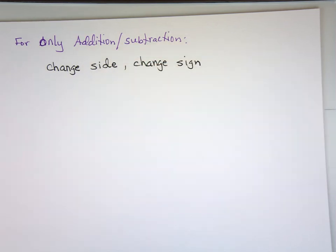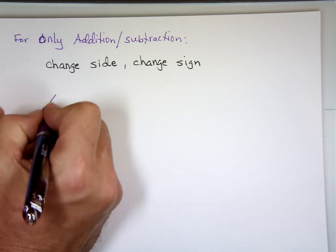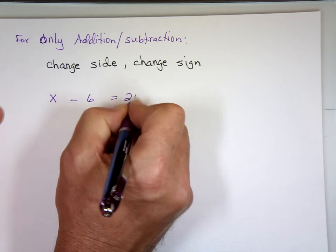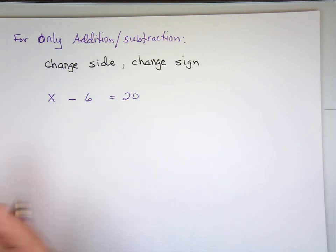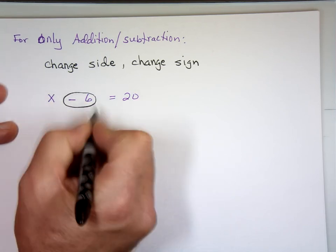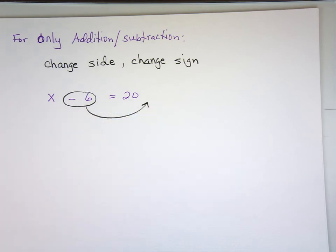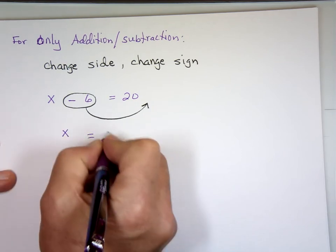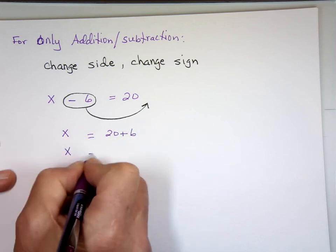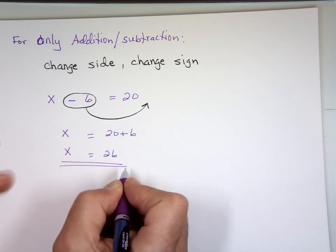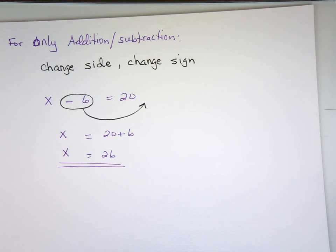I use this saying, cross the line change the sign. Oh I'm sorry, not cross line. Change side change sign. What does that mean? x minus 6 equals 20. My goal is all the x's on one side, all the numbers on the opposite side. Well I can accomplish that by taking the negative 6 from this side to that side, and when I change side what happened to the sign? Change the sign. So x becomes what? 20 plus 6 which is what? 26.